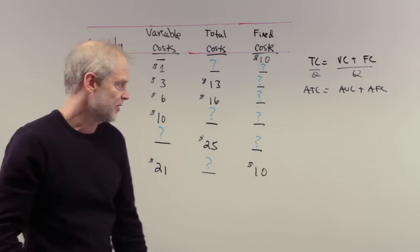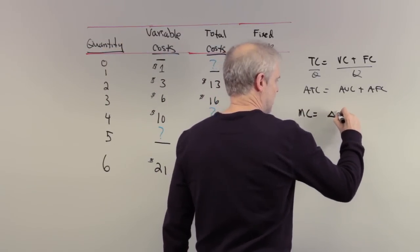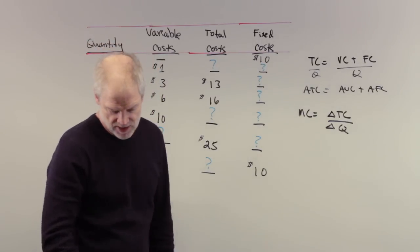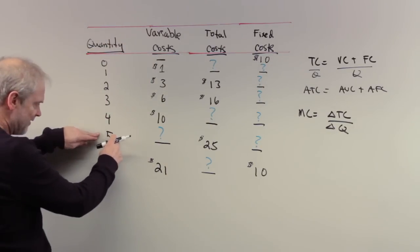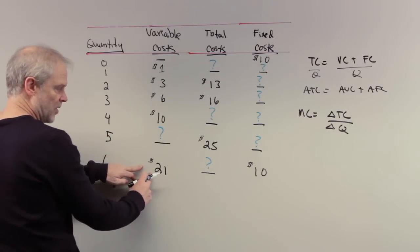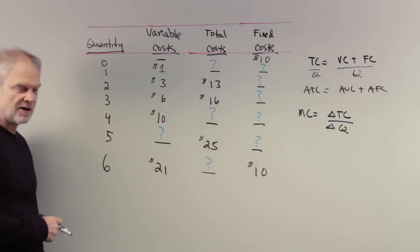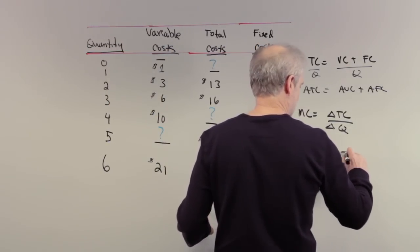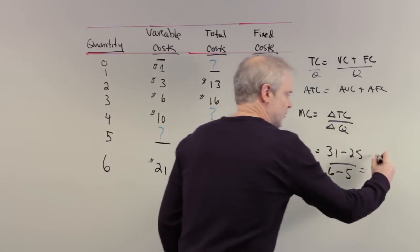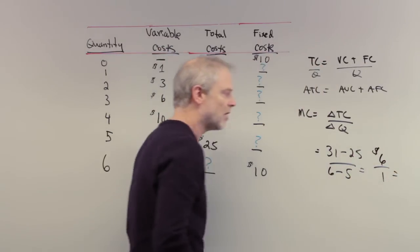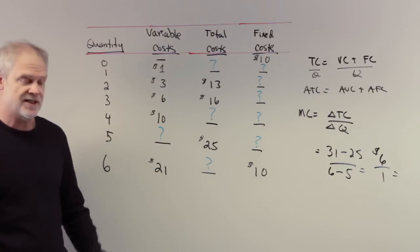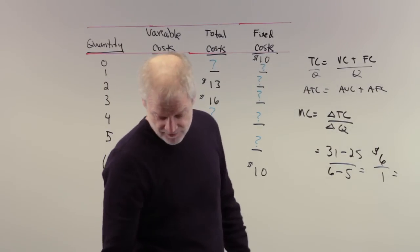Number four: the marginal cost of producing the sixth poster. MC equals the change in total cost given a change in Q. When you go from five posters to six posters, total cost goes from $25 to what? The variable cost is $21, the fixed cost is $10, so that has to be $31. The change in total cost is $31 minus $25 over six units minus five units, which equals $6. The marginal cost is $6 for the sixth poster.